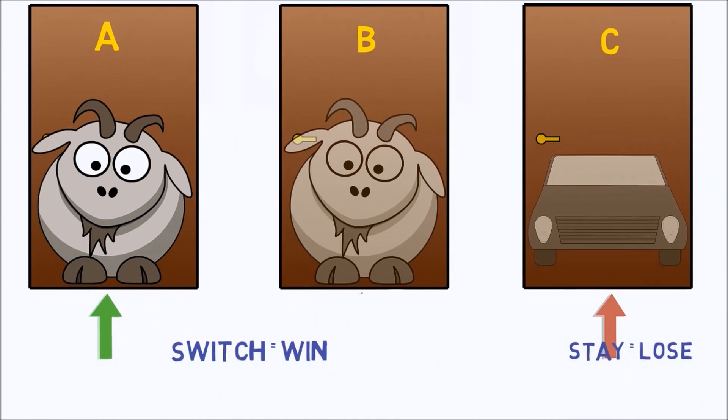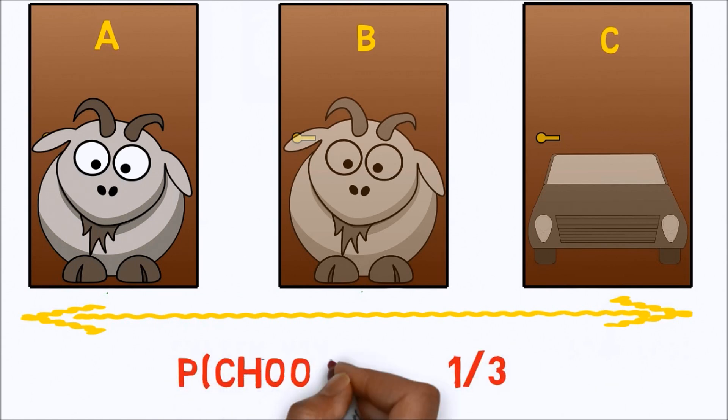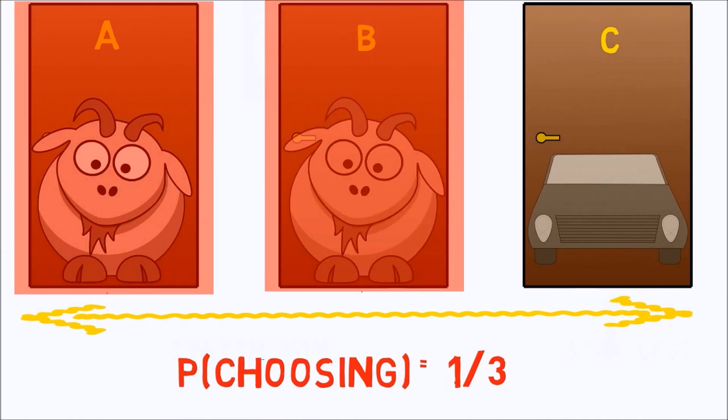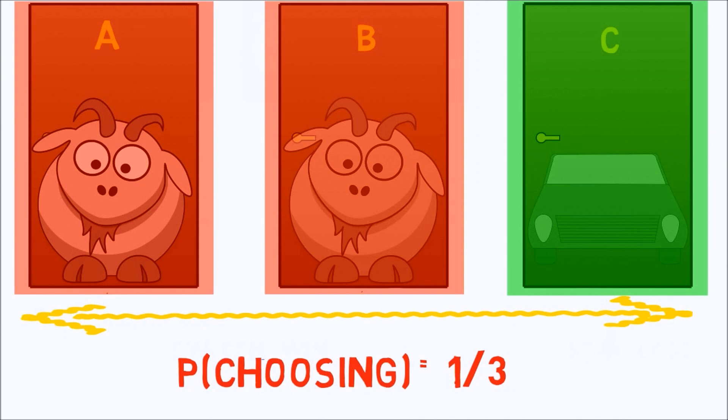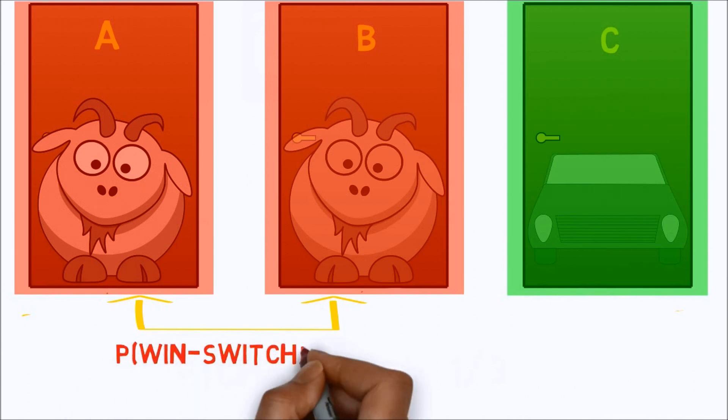Each of the above three options has a 1 by 3 probability of occurring, because the contestant is equally likely to begin by choosing any one of the three doors. In two of the above options, the contestant wins the car if he switches doors. In only one of the options he does win if he does not switch doors. Thus the probability of winning the car is 2 by 3 if he switches doors, which means that he should always switch doors, unless he really wants a goat. This result of 2 by 3 may seem counterintuitive, but it's the correct solution.